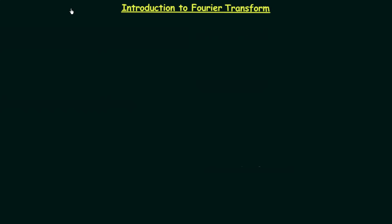From this lecture we will start a new chapter on Fourier transform. Fourier transform is an important chapter and the main things are its properties. We will try to understand all the properties and then implement them via questions. Don't forget to watch the lectures related to the questions. In this particular lecture I will introduce Fourier transform and understand a few basic points related to it. Let's start by understanding what Fourier transform is and why we use it.